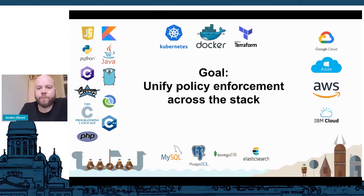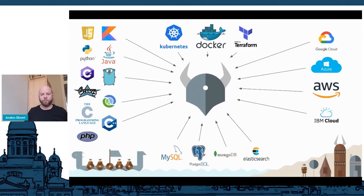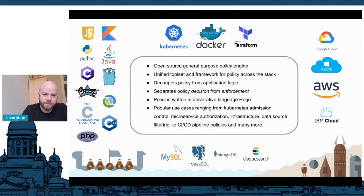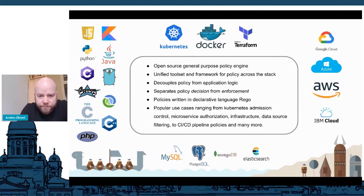So our goal here — why OPA? There's currently no good way of unifying policy enforcement across this whole stack. There wasn't until OPA came along. So this is the goal of OPA: unifying policy enforcement across this diverse set of products and technologies. So what is OPA then? OPA is an open source, general purpose policy engine. It offers a unified tool set and a framework for policy across the stack. It decouples policy from application logic, meaning you can take policy logic — like who gets to do what — and remove that from the business logic of your application. So you can reason about it separately, test it separately, and deploy it separately.